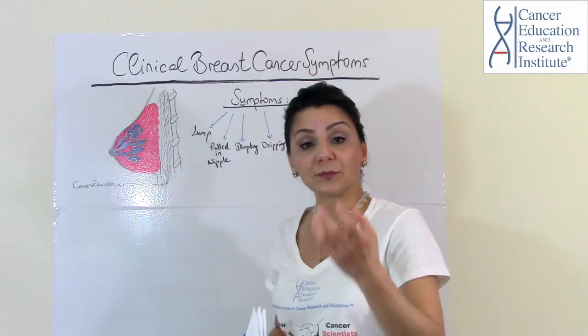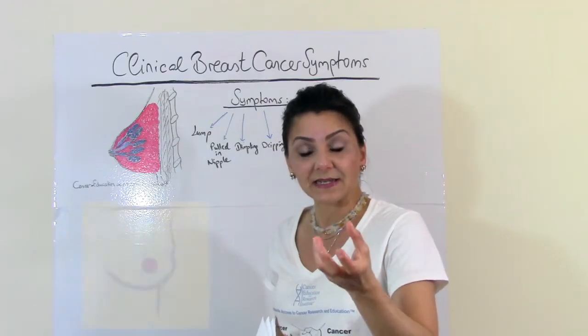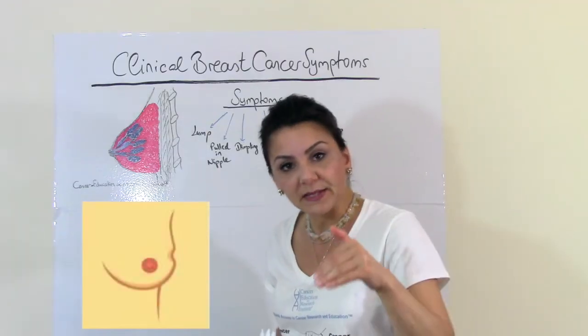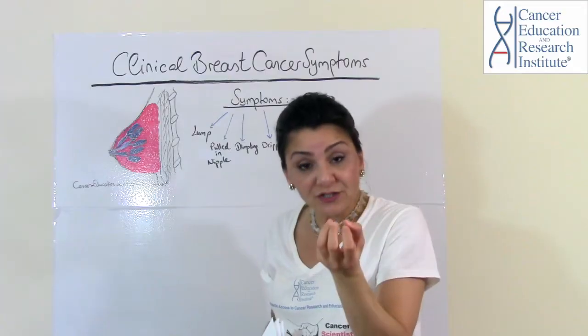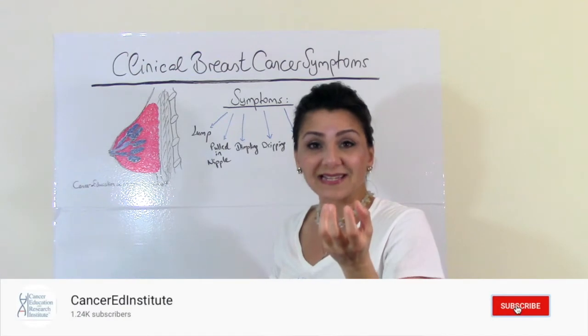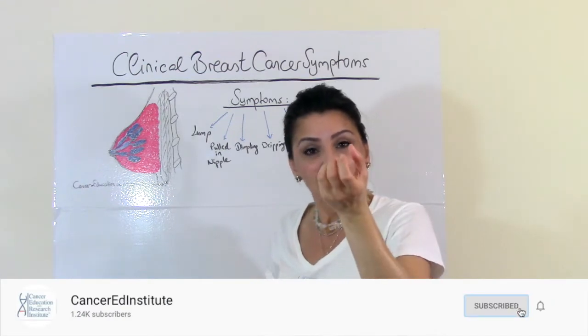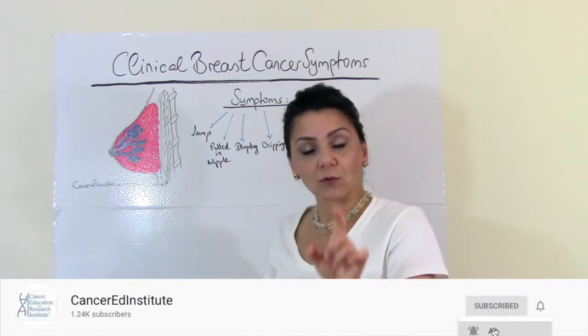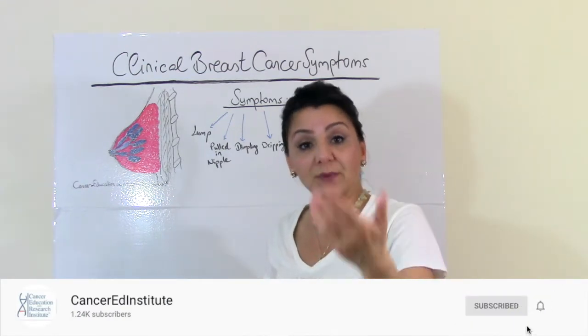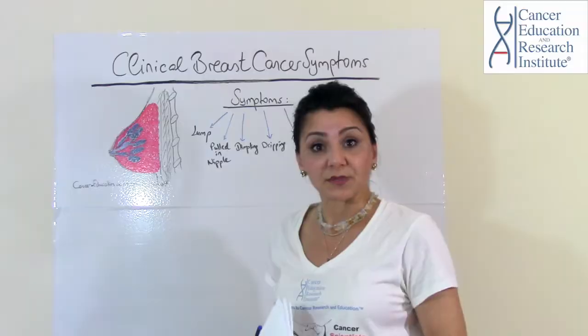If you see on the breast skin a dimpling — not on the nipple, but on the breast skin — a dimpling or a retraction which almost appears as if it was pulled in, then this is also a breast cancer symptom.